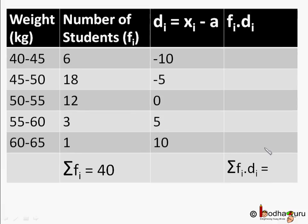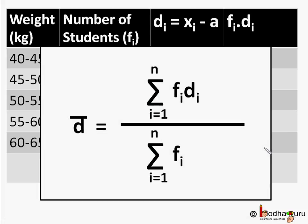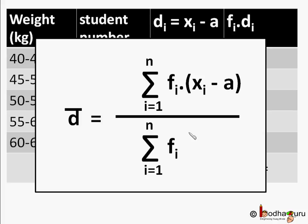We will then find the mean of deviation, that is d bar, which is sum of products fi di divided by sum of frequencies. Why? Because finding d bar is much easier as all the di have small values now.